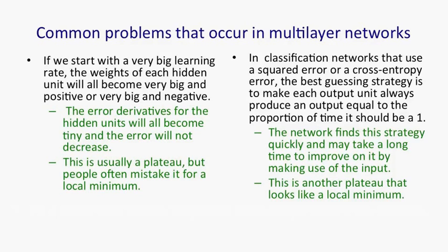A second problem that occurs is if you're classifying things, and you're using either a squared error or a cross entropy error, the best guessing strategy is normally to make the output unit equal to the proportion of the time that it should be one. The network will fairly quickly find that strategy, and so the error will fall quickly. But particularly if the network has many layers, it may take a long time before it improves much on that. Because to improve over the guessing strategy, it has to get sensible information from the input through all the hidden layers to the output.